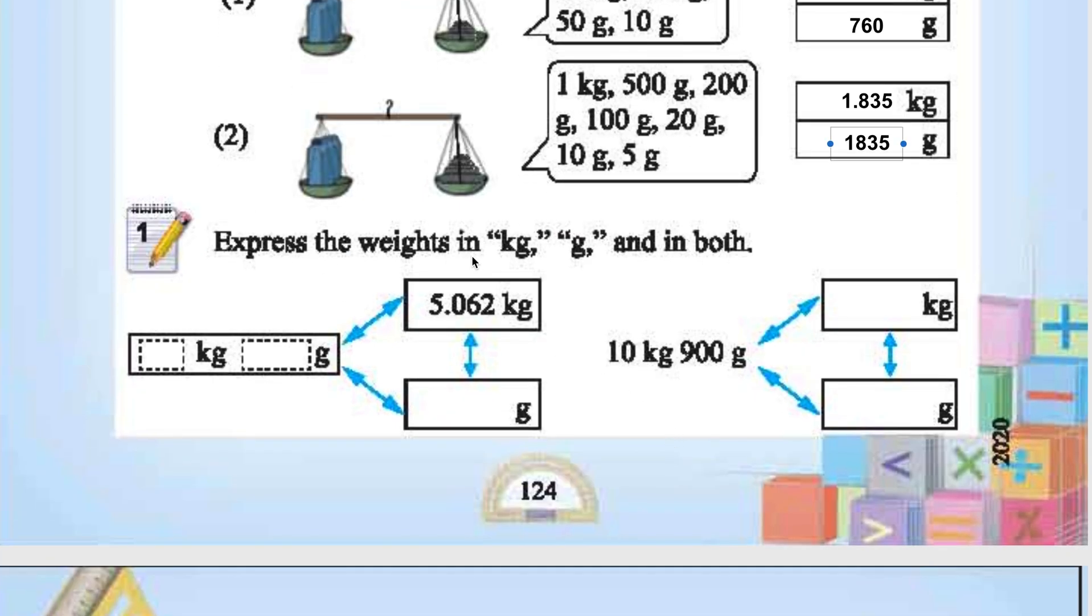Express the weights in kg and grams and in both. Simply it is 5 kg 62 grams, so 5,062 grams.